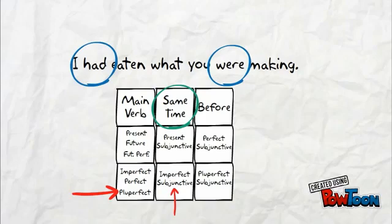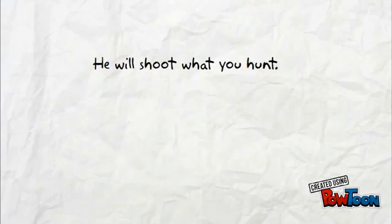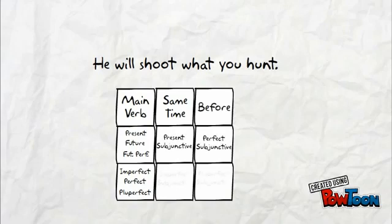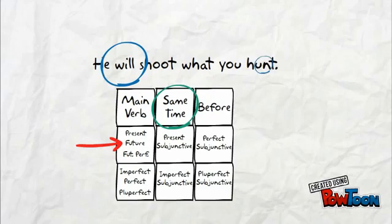Let's look at one more: 'He will shoot what you hunt.' Just like the other two, we look at the main verb first. Then, we decide about the timeline for the rest of the sentence. 'He will' is in the future tense. At the same time as you hunt, he will shoot the prey. Thus, we use the Latin present subjunctive to convey our meaning.